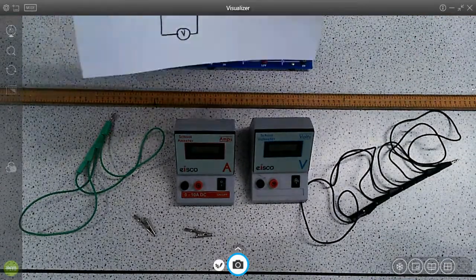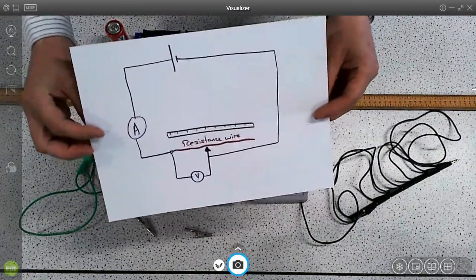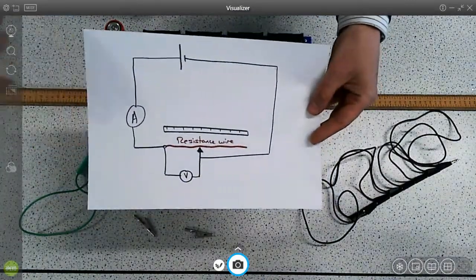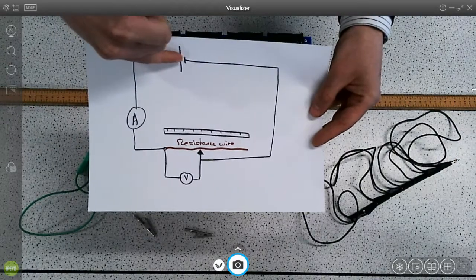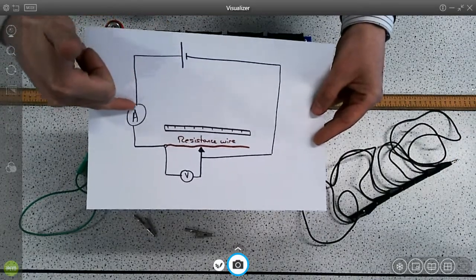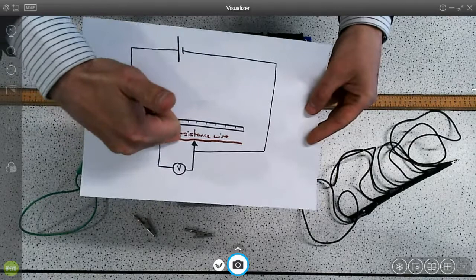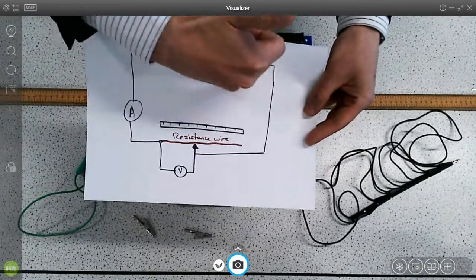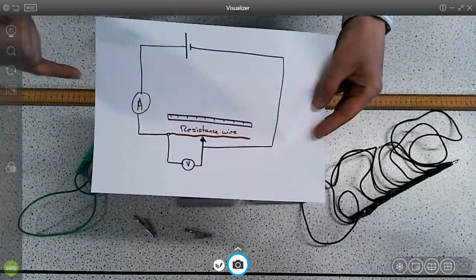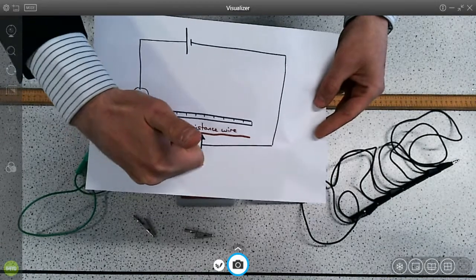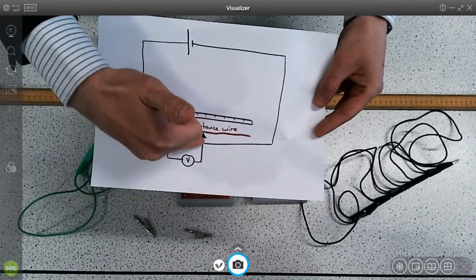The circuit diagram that we're going to work to is this circuit diagram here. So we can see that the circuit involves an ammeter to measure the current through a length of the wire, and then it also involves a voltmeter to measure the potential difference across a length of wire.